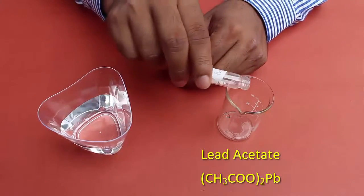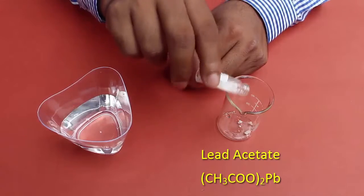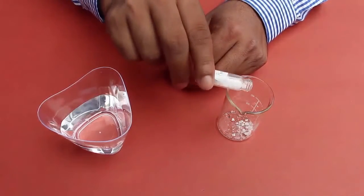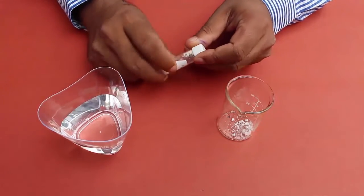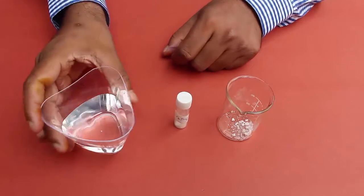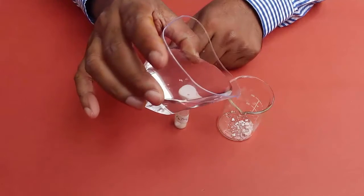For this we will place a few crystals of lead acetate in an empty beaker and then we pour some water in the beaker and stir it until the crystals dissolve.